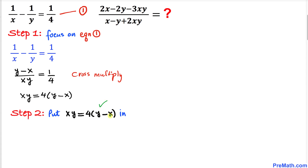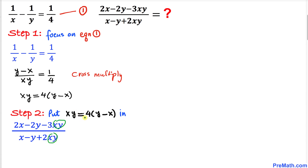Now let's plug the value xy equals 4 times y minus x into the expression. Wherever we see x times y, we replace it with 4 times y minus x.